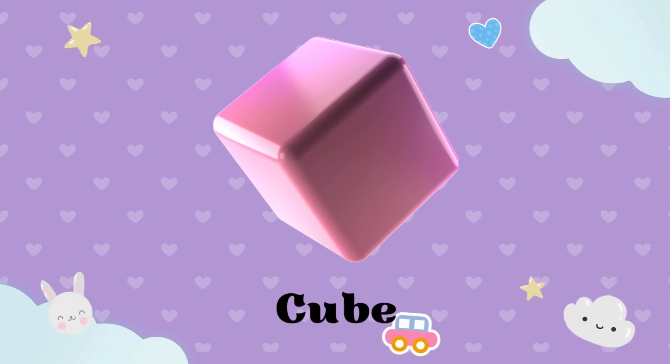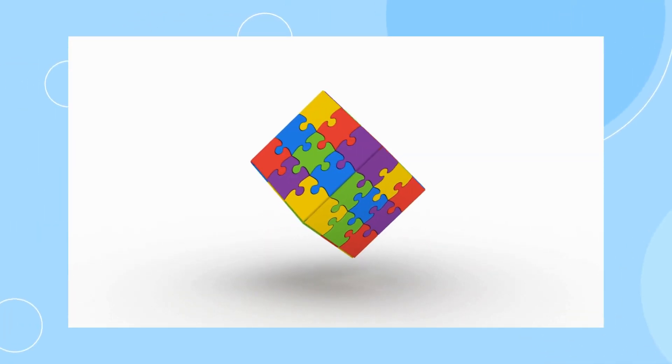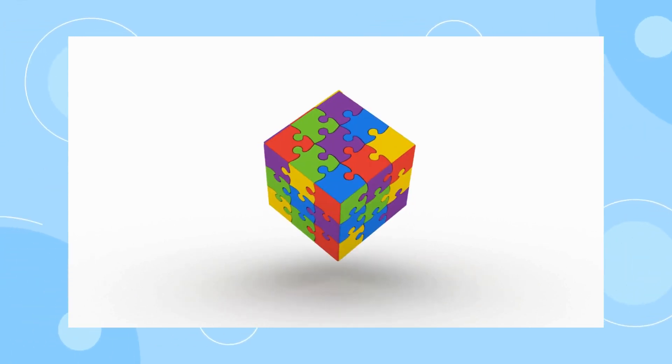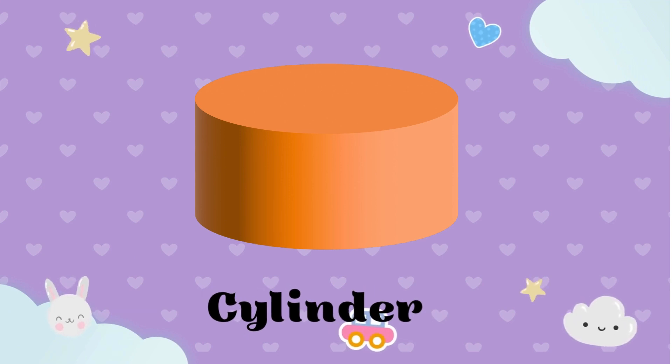Cube - a box shaped object with six equal square faces. Cylinder - a shape with two circular faces and a curved surface connecting them.